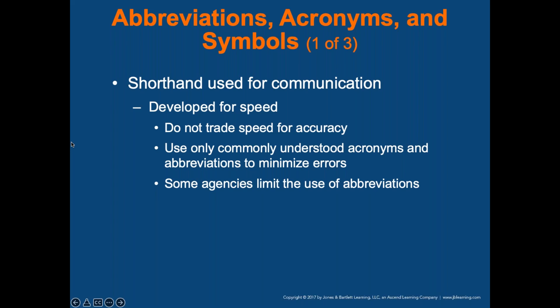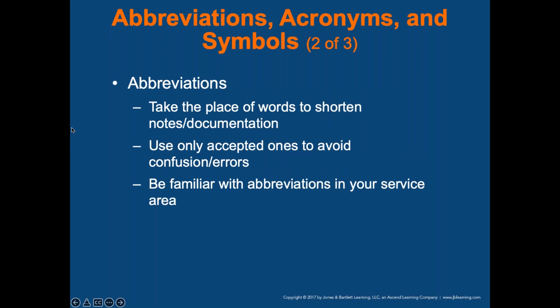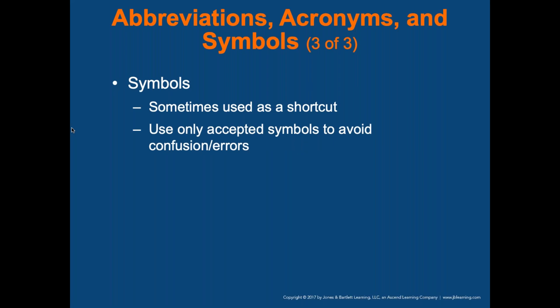The Joint Commission and the Institute for Safe Medication Practices are authorities on abbreviations and provide 'do not use' lists. When you use an abbreviation, pronounce each letter separately and distinctly. Use only accepted abbreviations to avoid confusion or errors. For symbols, the most common are male versus female — but when typing out narratives, those symbols aren't available, so you must spell out male and female.